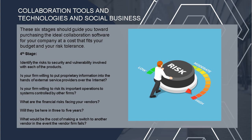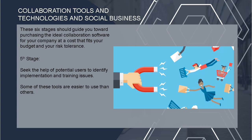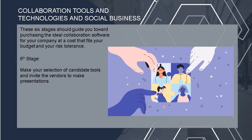The fifth stage is to seek the help of potential users to identify implementation and training issues. Some tools are easier to use than others, and there should be comparison between products. For the sixth and last stage, make your selection of candidate tools and invite vendors to make presentations. When acquiring a system, you must carefully consider what the company will benefit from it, especially since it costs a lot of money and is time-consuming to build. With all the effort involved, it must be worth it and beneficial to the company.